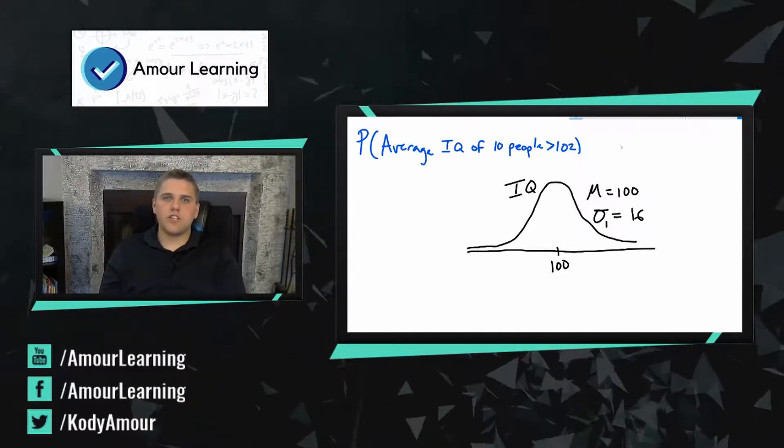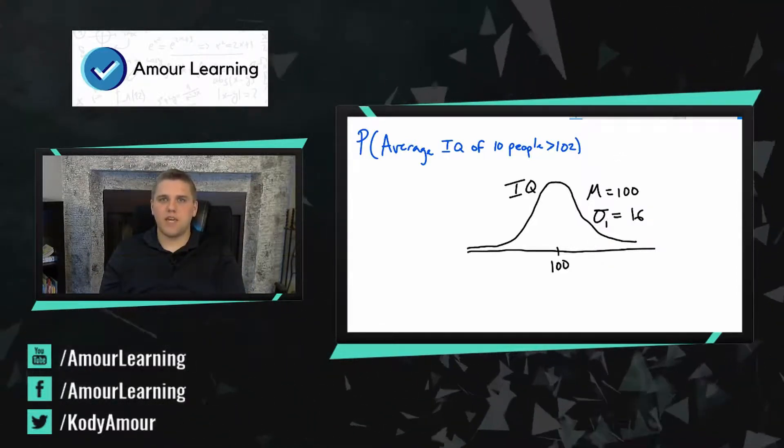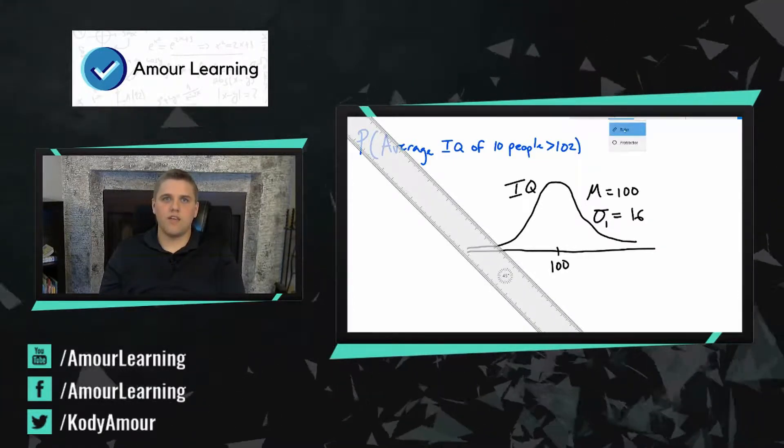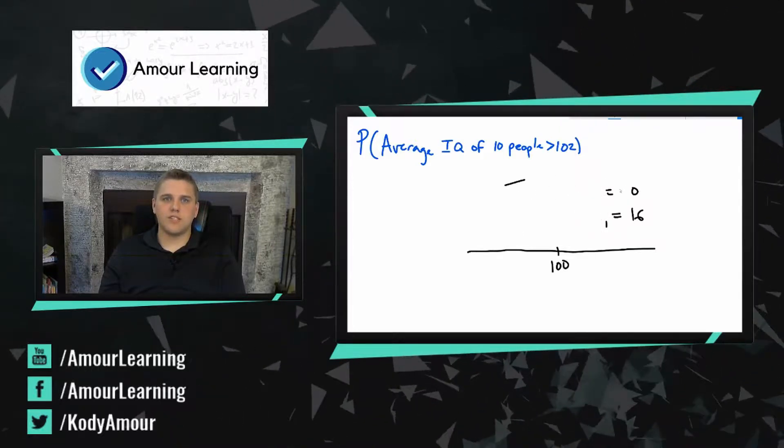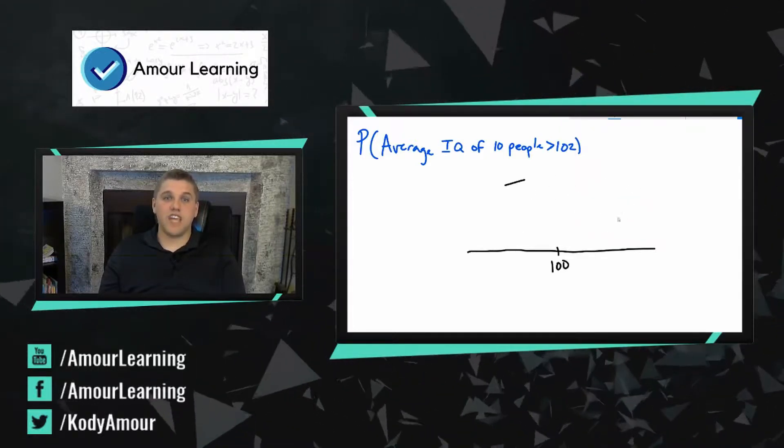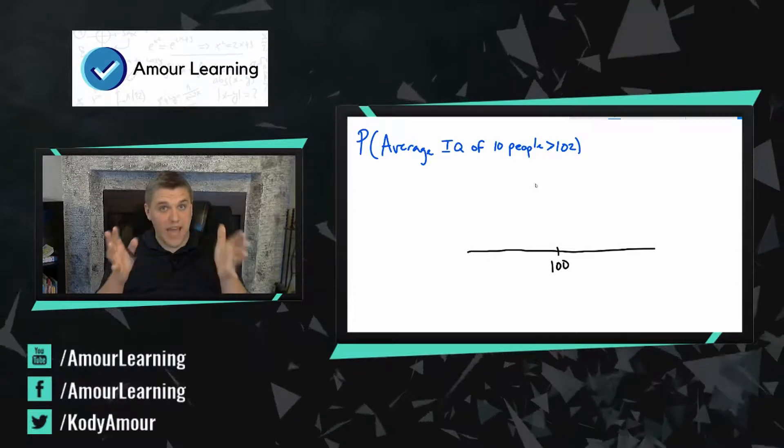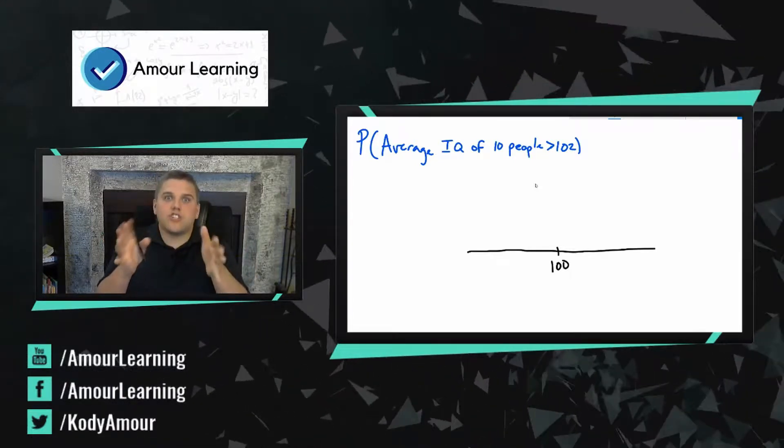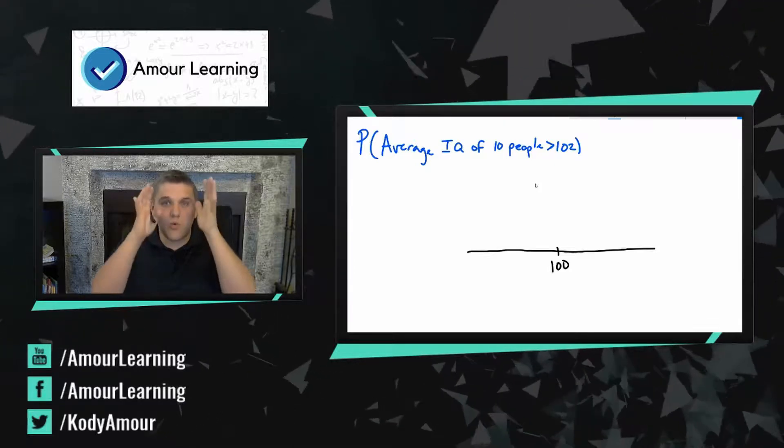We're talking about finding the probability that the average of 10 random people is greater than 102. So this problem changes a little bit because if you take the average of 10 people, you would expect averages of 10 people to be really close to 100.